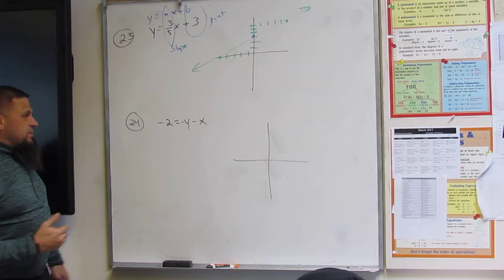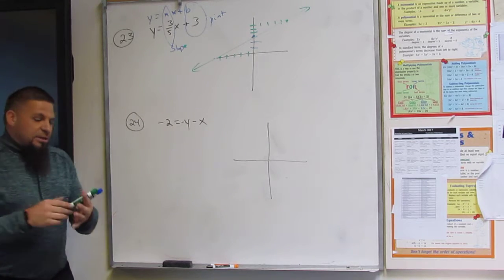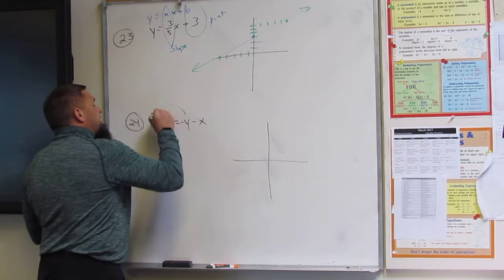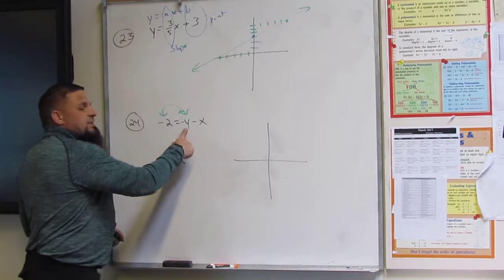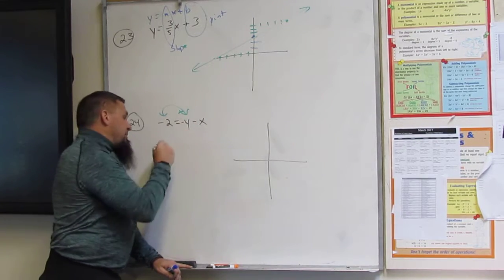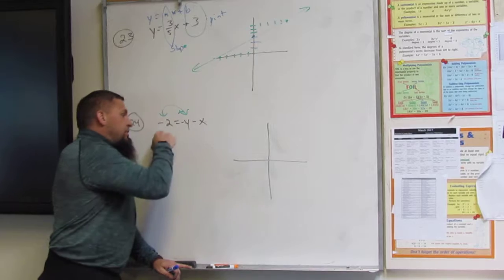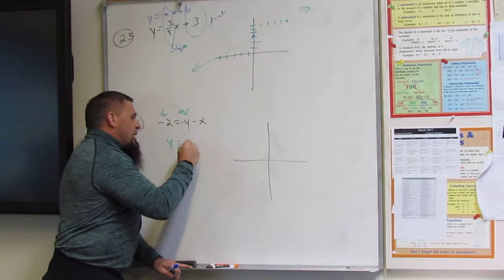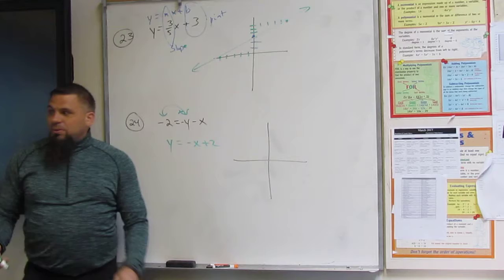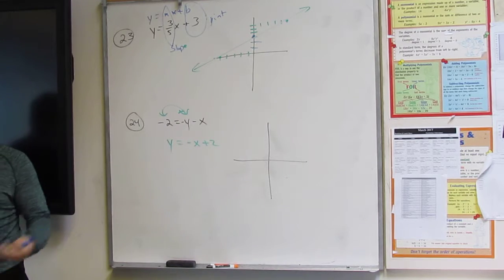y equals mx plus b. In this case, it's not y equals mx plus b, so what I want to do is switch these guys. This is negative, so I want to make it positive. I just move this over here, equals negative x plus two. Guess what? Now it's y equals mx plus b.